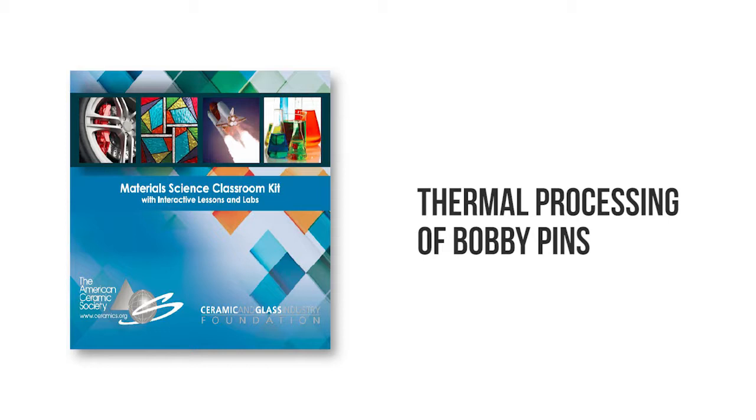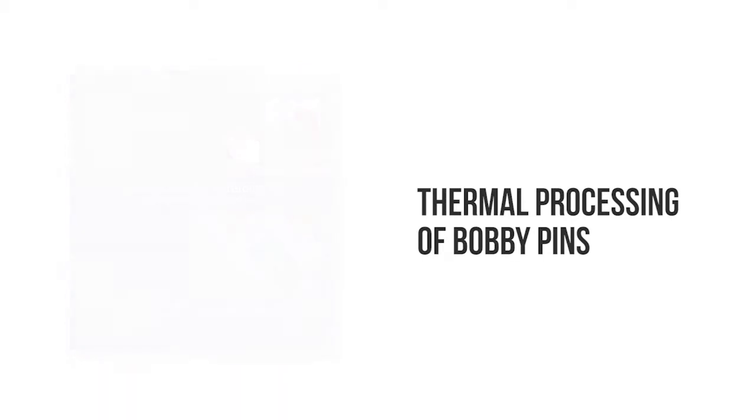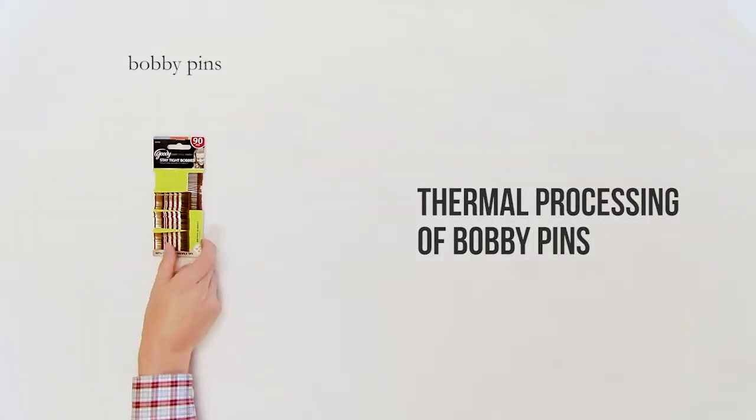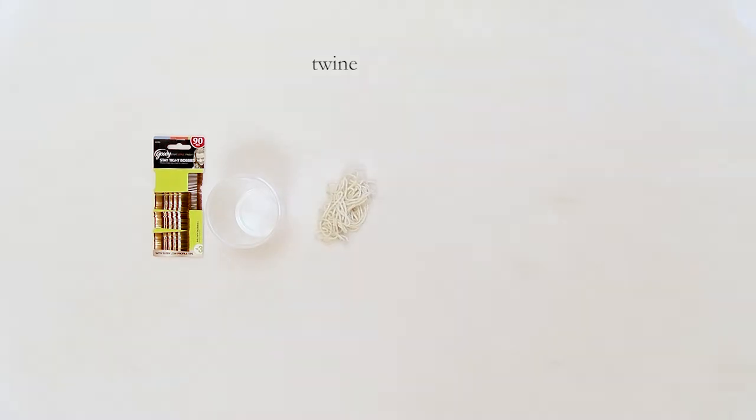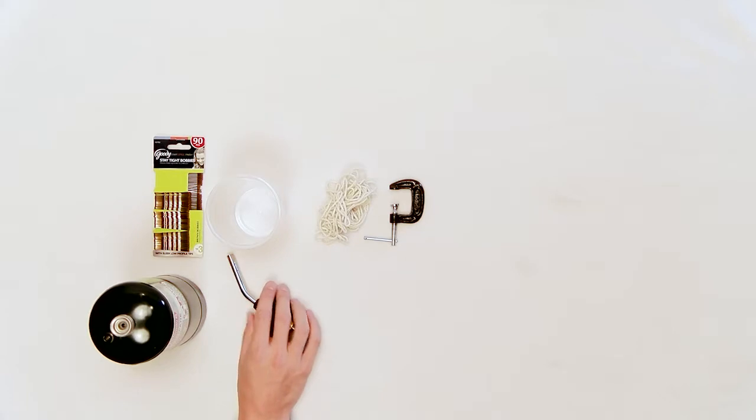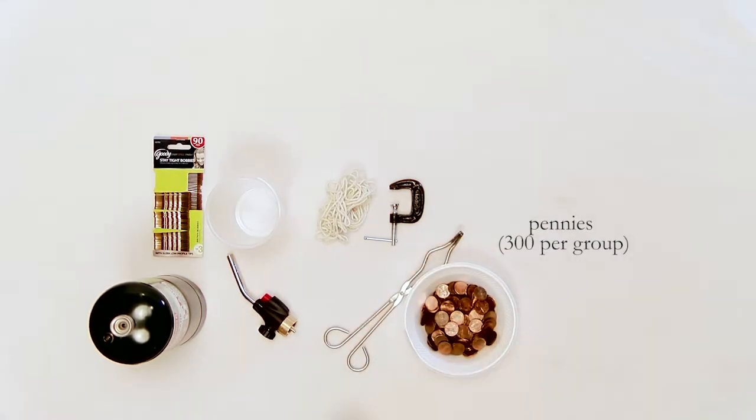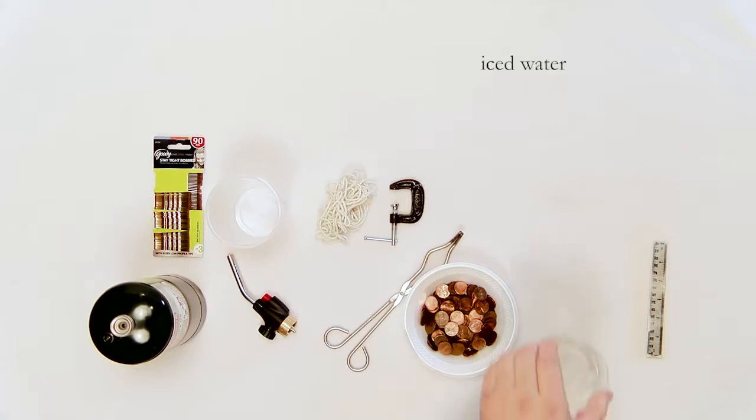In some instances, it is appropriate for students to bring some items from home, which helps pique their interest. The materials needed for this demonstration are one package of bobby pins, plastic cups with twine, five C-clamps, Bunsen burner or propane torch, pliers or tongs, pennies 300 per group, ruler, cup filled with cold water.